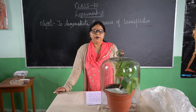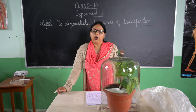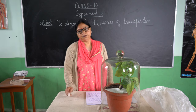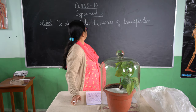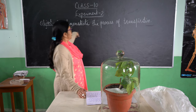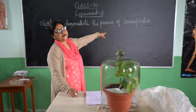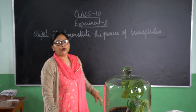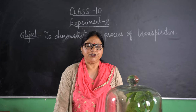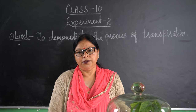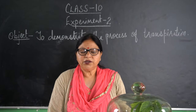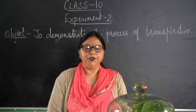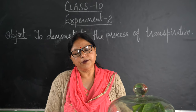Hello class 10. Now I am explaining experiment number 2. The object of this experiment is to demonstrate the process of transpiration. Transpiration is a physiological process by which water is lost from aerial parts of the plant in the form of water vapor.